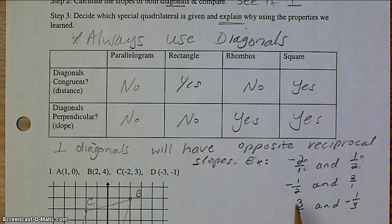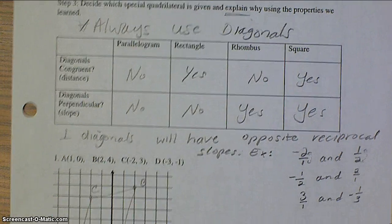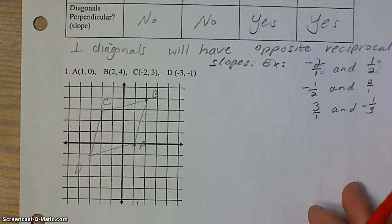Same thing with negative 1 half and positive 2, or positive 3 and negative 1 third. Those are all two slopes that will give you perpendicular diagonals. So, let's go ahead and begin question number 1.